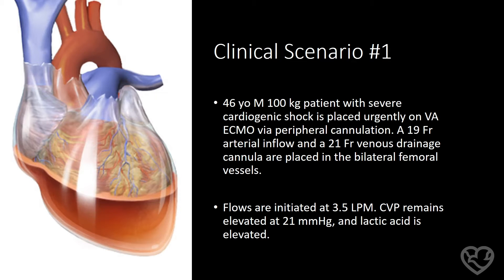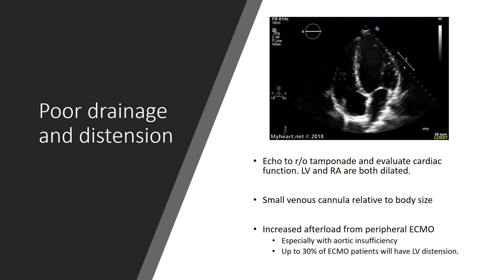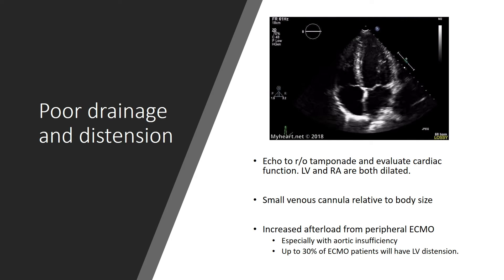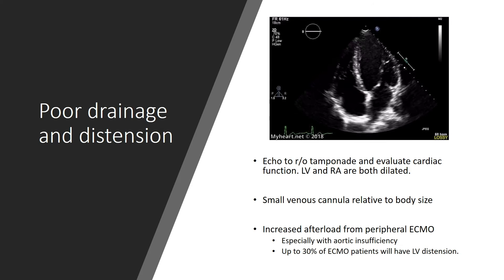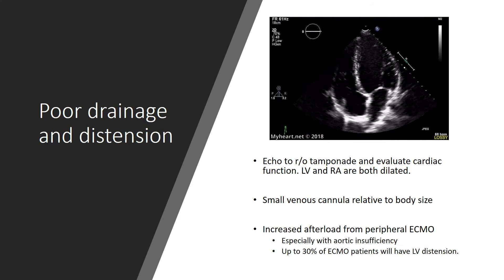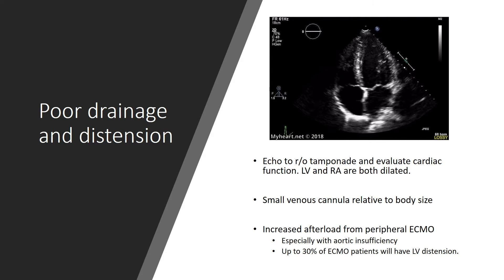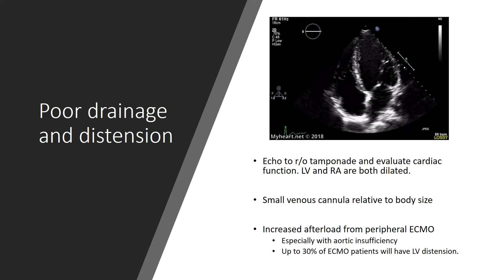After obtaining a series of arterial blood gases within the first couple hours of ECMO initiation, the patient still appears to be acidotic, the lactate continues to rise, and the CVP remains elevated. An echo is ordered to assess for cardiac function or tamponade as well as an ultrasound to check for the presence of a pneumo or pericardial effusion. After examining the echo, the LV appears to be very dilated as well as a distended and full right atrium.